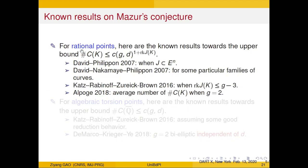Some previous results in the direction of removing Faltings' height dependence. For rational points, David and Philippon proved this result when J is a sub-variety of copies of elliptic curves and under some other technical hypotheses. In the same year, with Ancona, they also proved this result for some particular families of curves — for each g at least four, they found infinitely many families satisfying this property. These proofs use different height estimates and are based on the proof of Vojta.